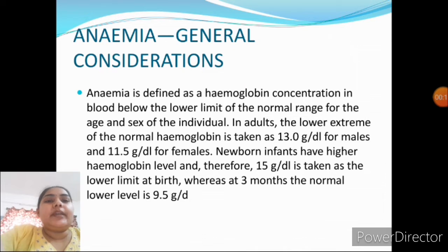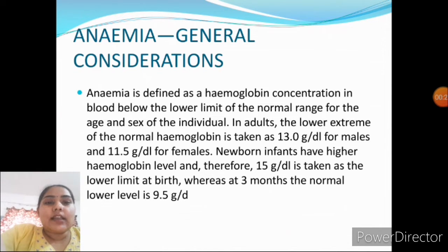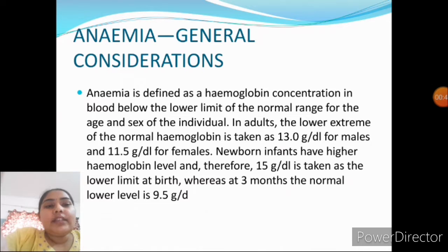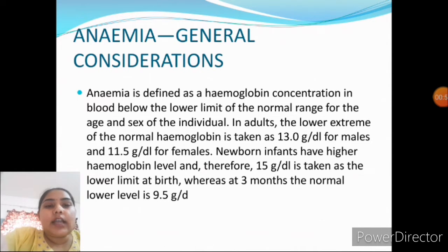Anemia is defined as the hemoglobin concentration in blood below the lower limit of the normal range for the sex and age of the individual. In adults, the lower limit of normal Hb is taken as 13 g/dL for males and 11.5 to 12 g/dL for females. Newborn infants have higher hemoglobin levels; 15 g/dL is taken as the lower limit at birth, whereas at three months the normal lower level is 9.5 g/dL.